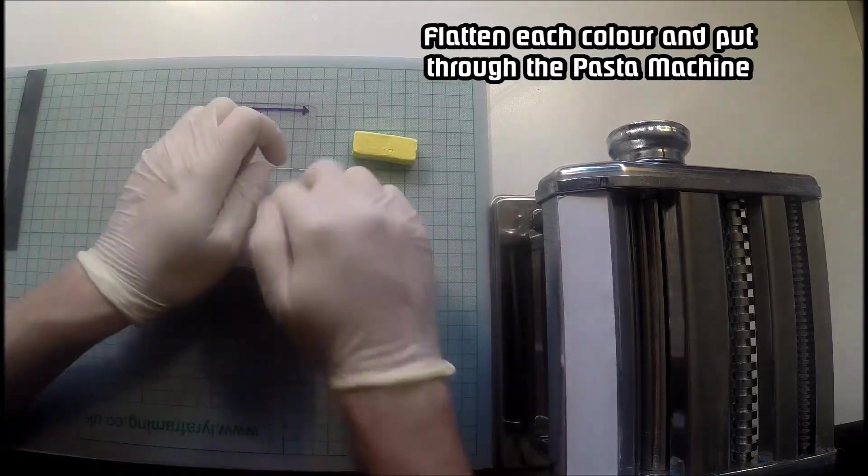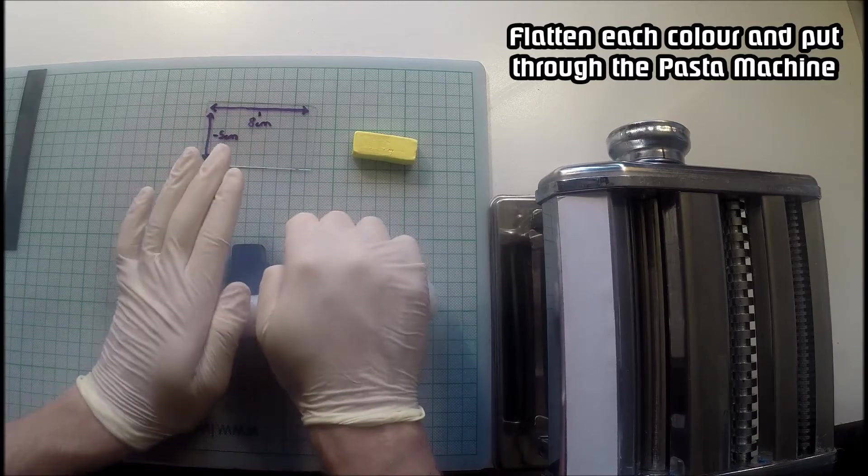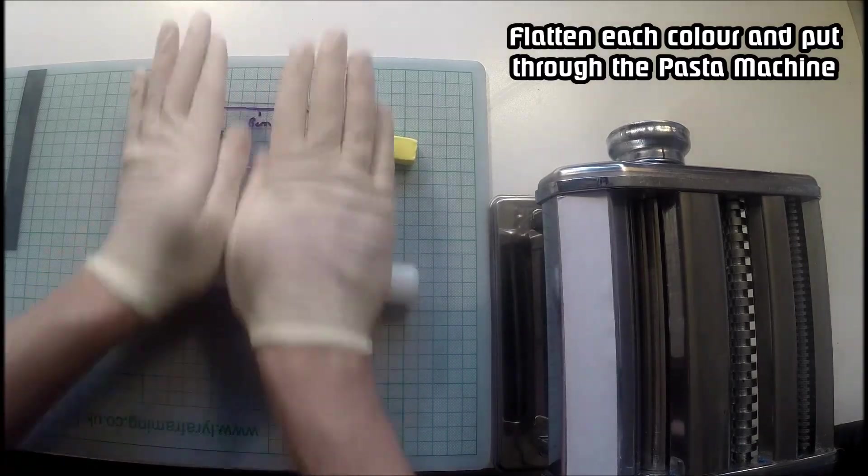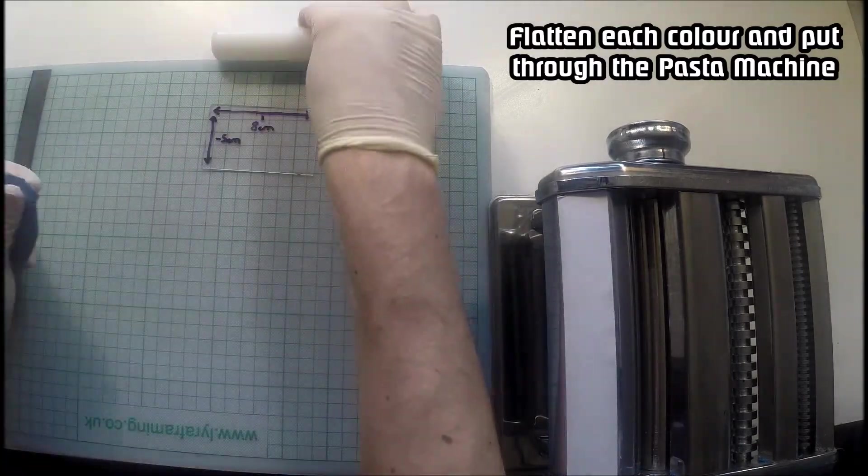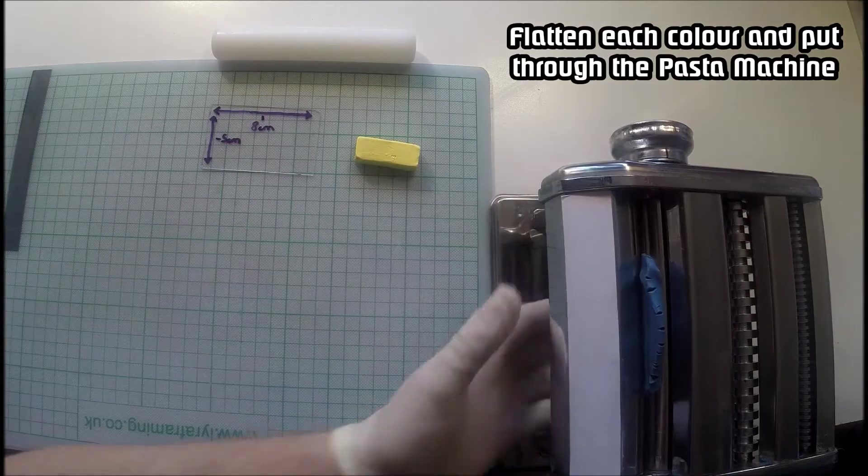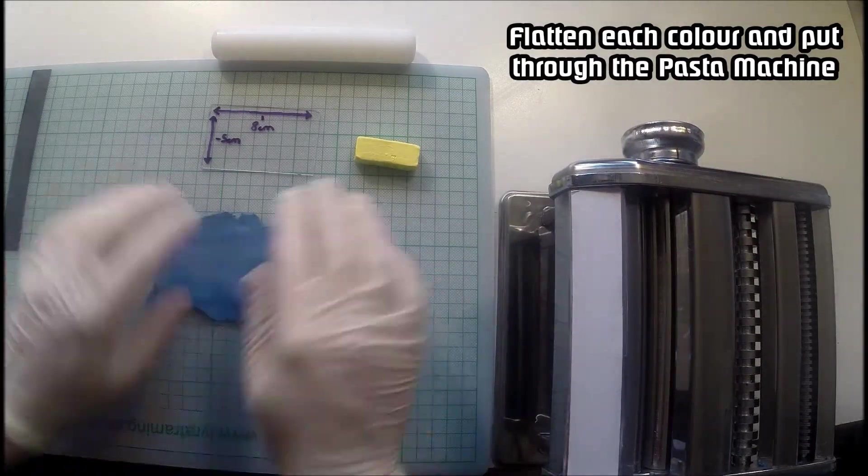Take each piece of clay and then just gently flatten them a little bit, not too much, just enough so that they fit through the pasta machine easily. Voila, nice and flat.